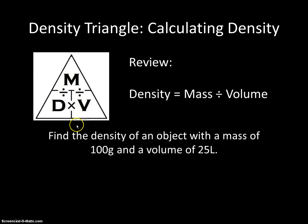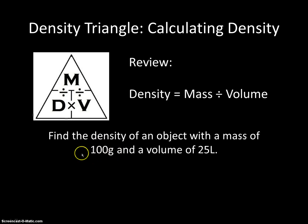This is going to be a review. The problem is: find the density of an object with a mass of 100 grams and a volume of 25 liters. When you look at these questions, just look at the number and the units. I know 100 grams — grams is a measurement of mass. The volume is 25 liters — liters is a measurement of volume. So I have mass and volume, and this question asks me to find the density.